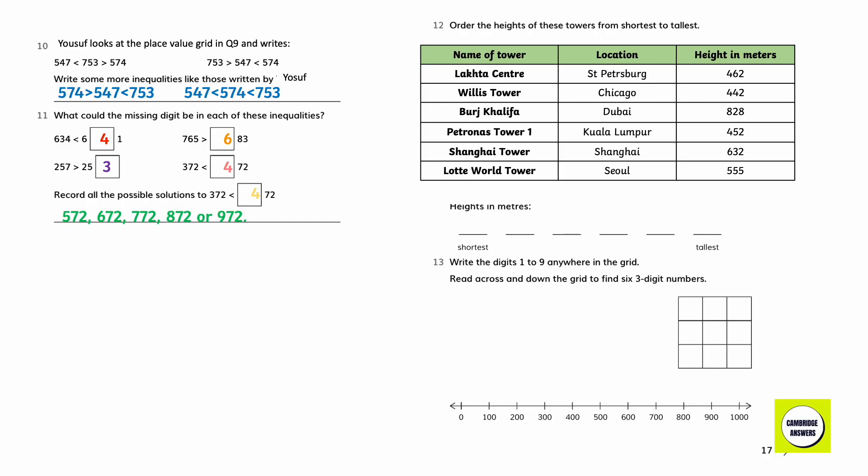Order these heights of the towers from shortest to tallest: 442, 452, 462, 555, 632, 828.